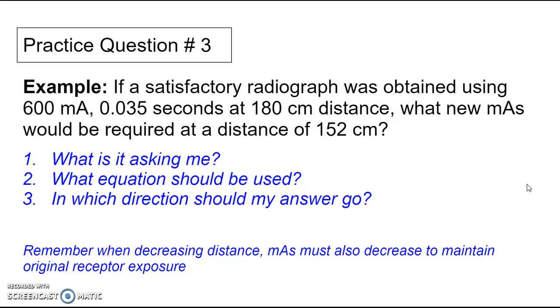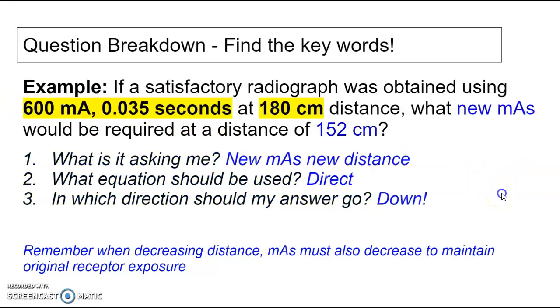Question 3. Radiograph was obtained using 600 mA, 0.035 seconds, at 180 centimeters distance. What new mAs will be required at a distance of 152 centimeters? All right, this one looks a little bit different, because it didn't give us an mAs. It gave us an mA and a time.